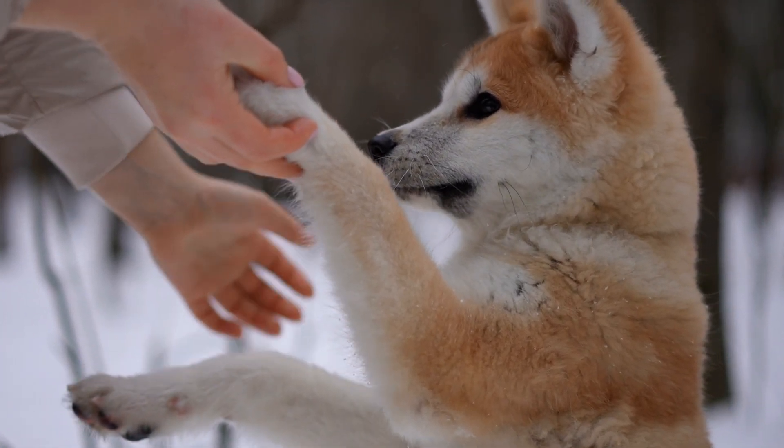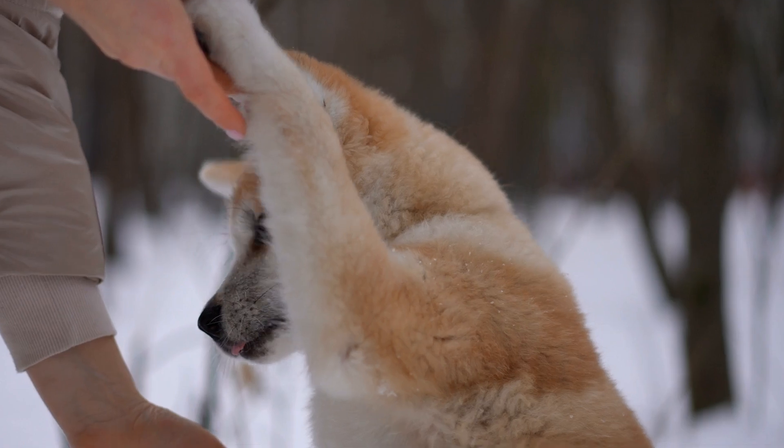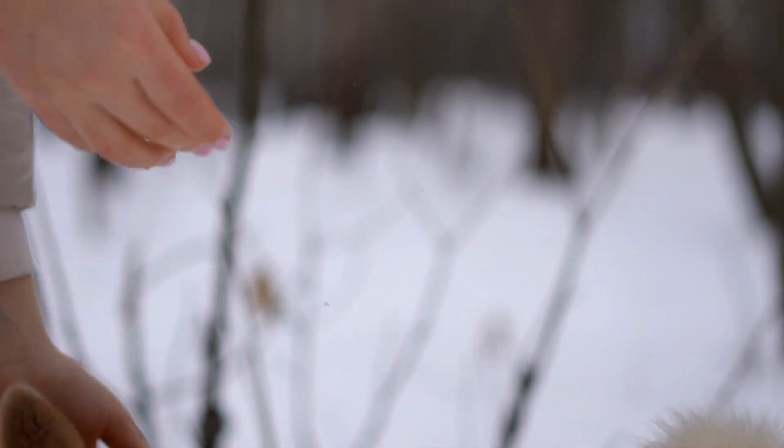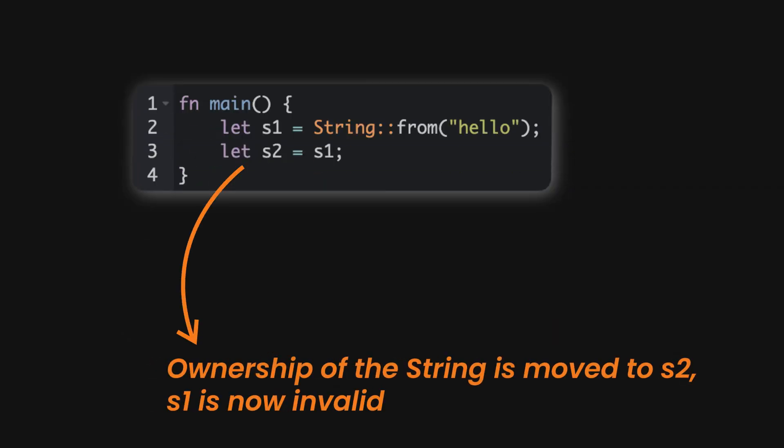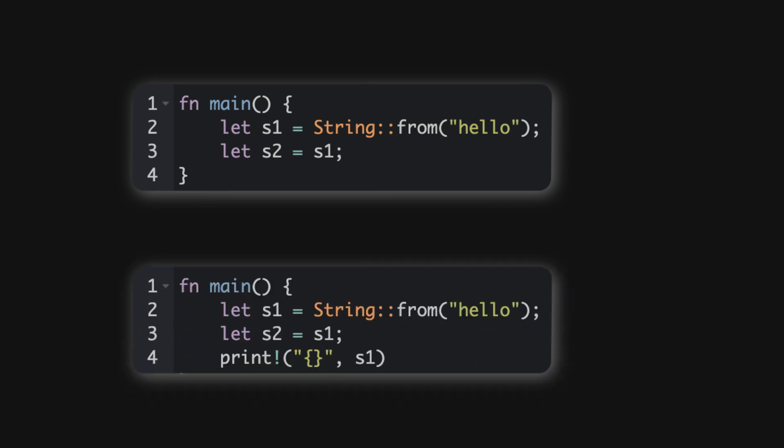When that owner goes out of scope, the value gets dropped, and if you try to use it afterward, Rust is gonna stop you. So here, s1 loses its ownership once s2 takes over. If you try to use s1 after this point, Rust will throw an error because it's no longer in charge. It's like Rust is saying 'That's not yours anymore.'